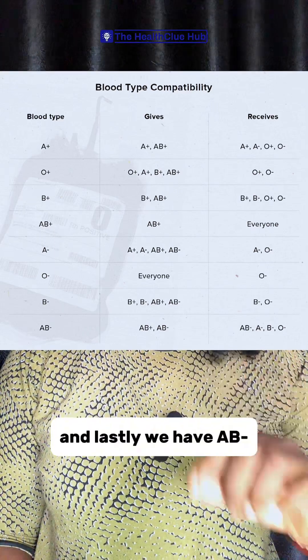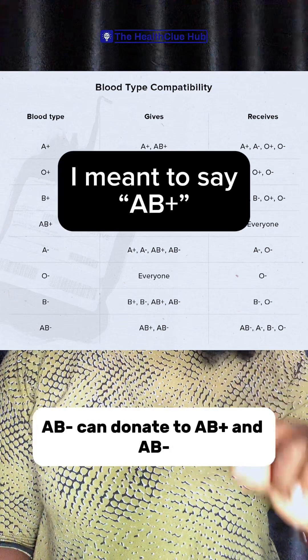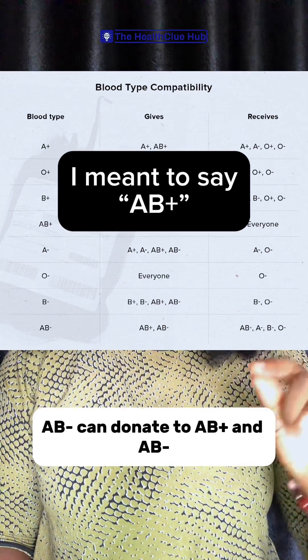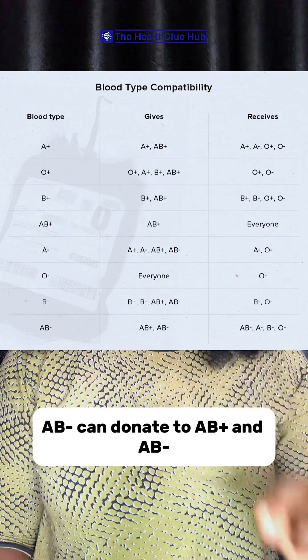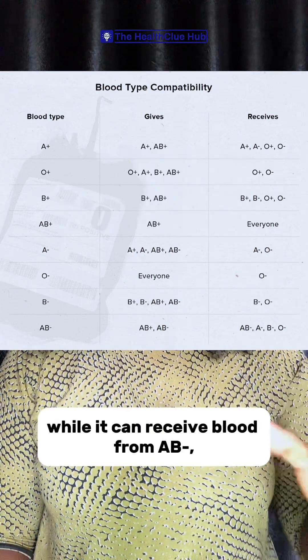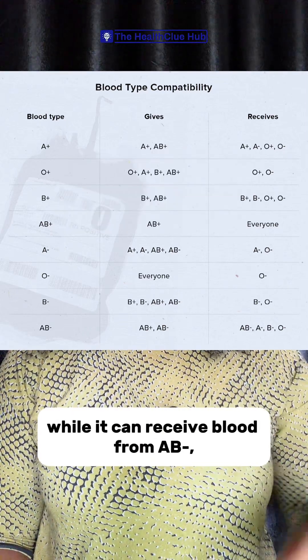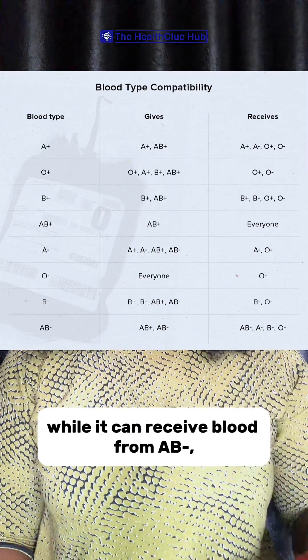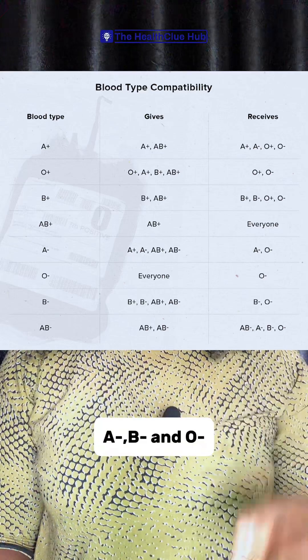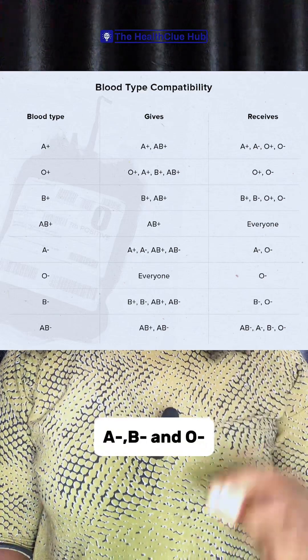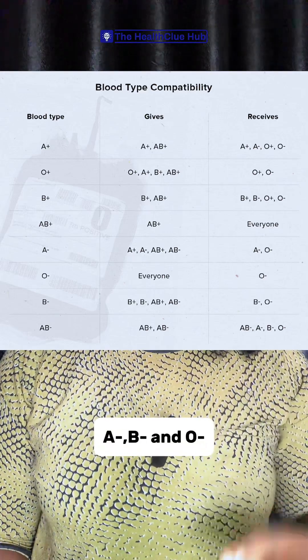Lastly, we have AB negative. AB negative can donate to AB positive and AB negative, while it can receive blood from AB negative, A negative, B negative, and O negative.